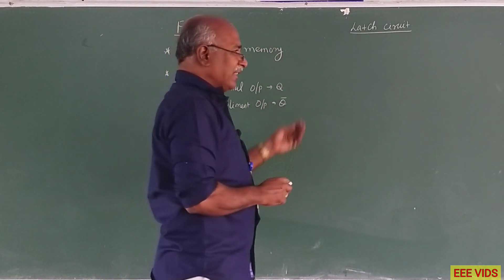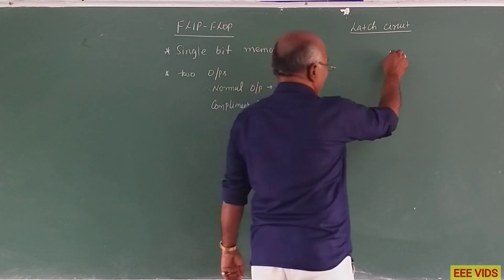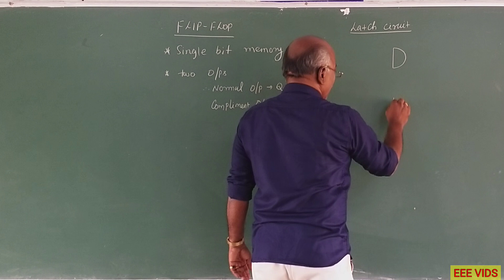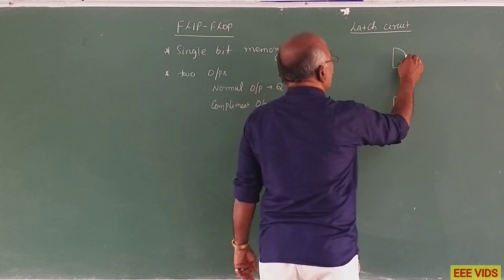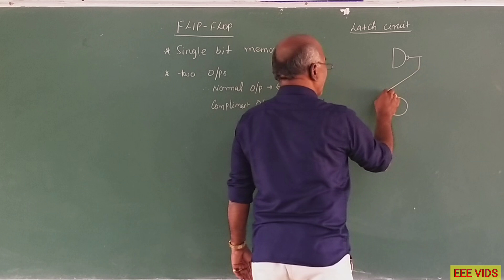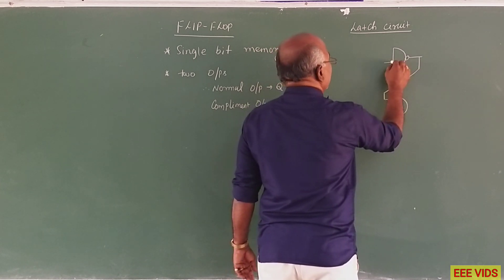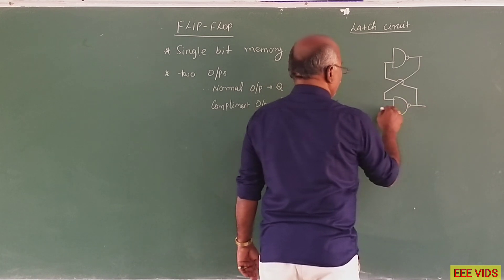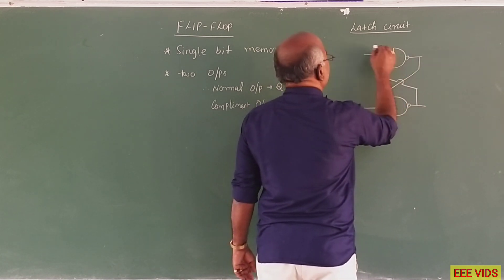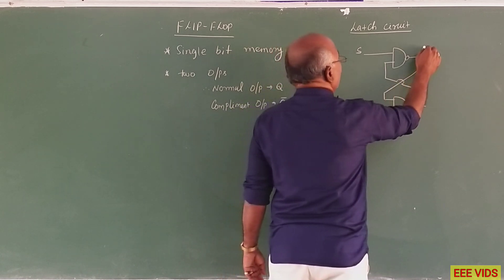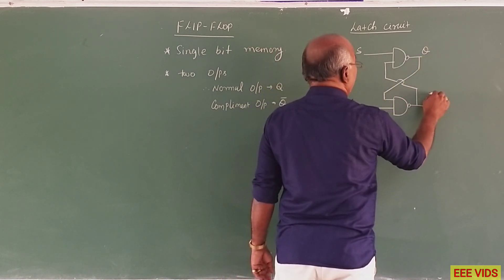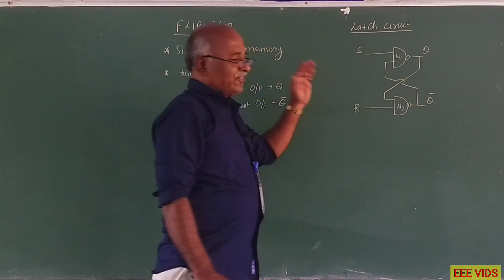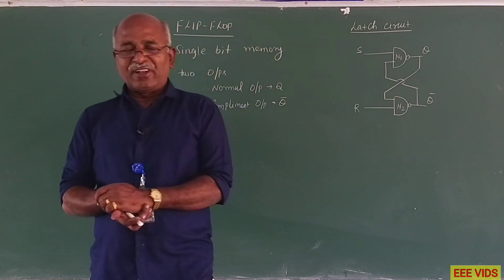The latch circuit is otherwise called SR flip-flop, or SR latch. In the SR latch, two NAND gates are used — N1 and N2. One NAND gate's output is fed back as input to the other NAND gate, creating a feedback loop used in all flip-flop circuits. The outputs are Q and Q-bar, with N1 and N2 as NAND gates — this is the latch circuit or SR flip-flop.